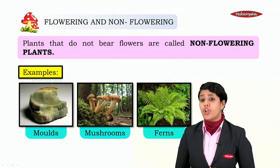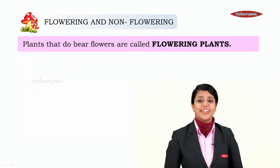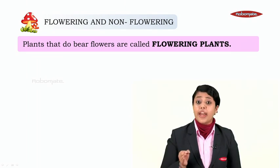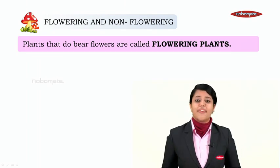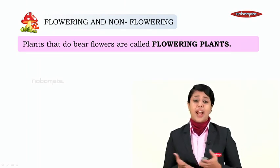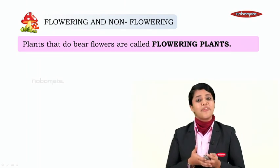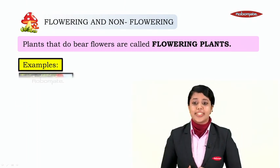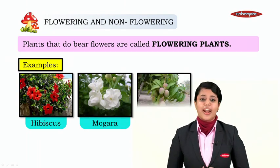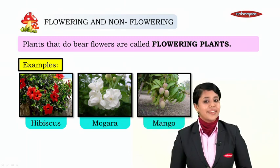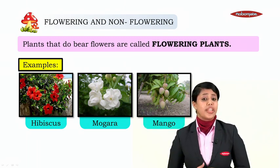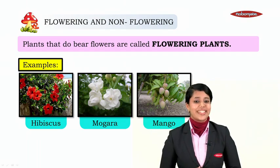Plants that do bear flowers are called flowering plants. It is very simple — plants that have flowers are called flowering plants. Examples include hibiscus, mogra, and mango; they all have flowers on them, so they are flowering plants.